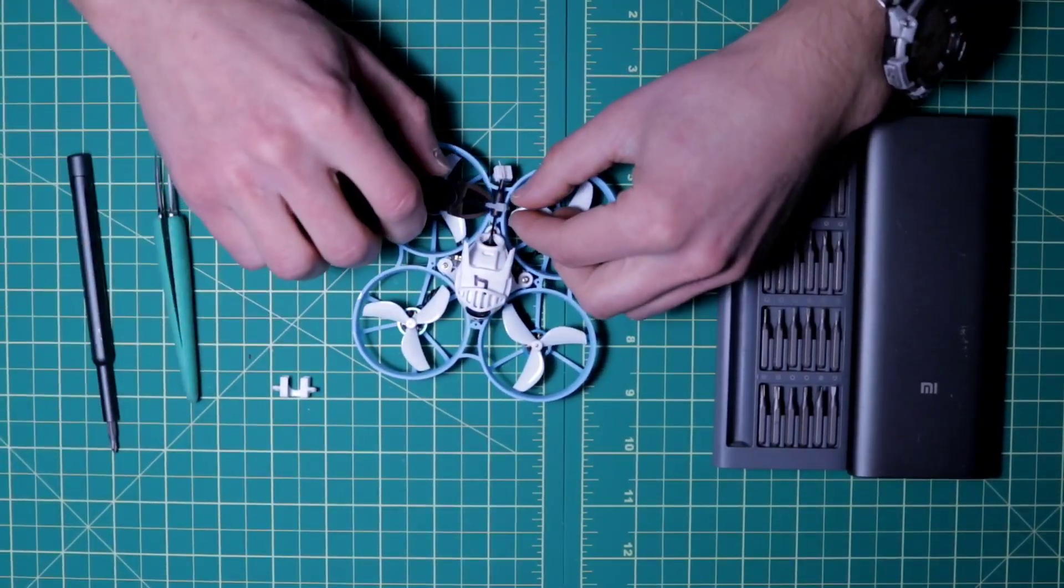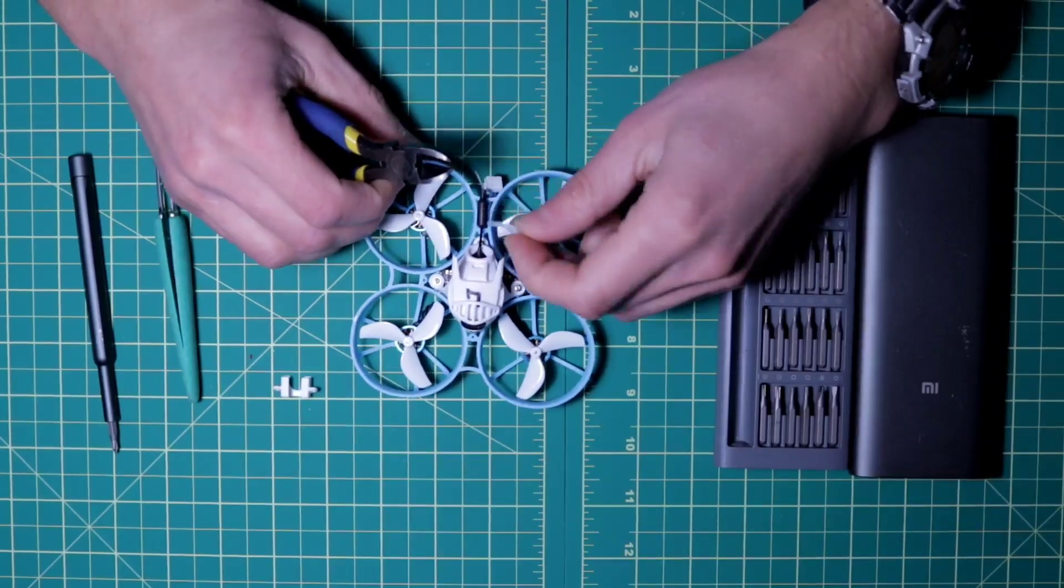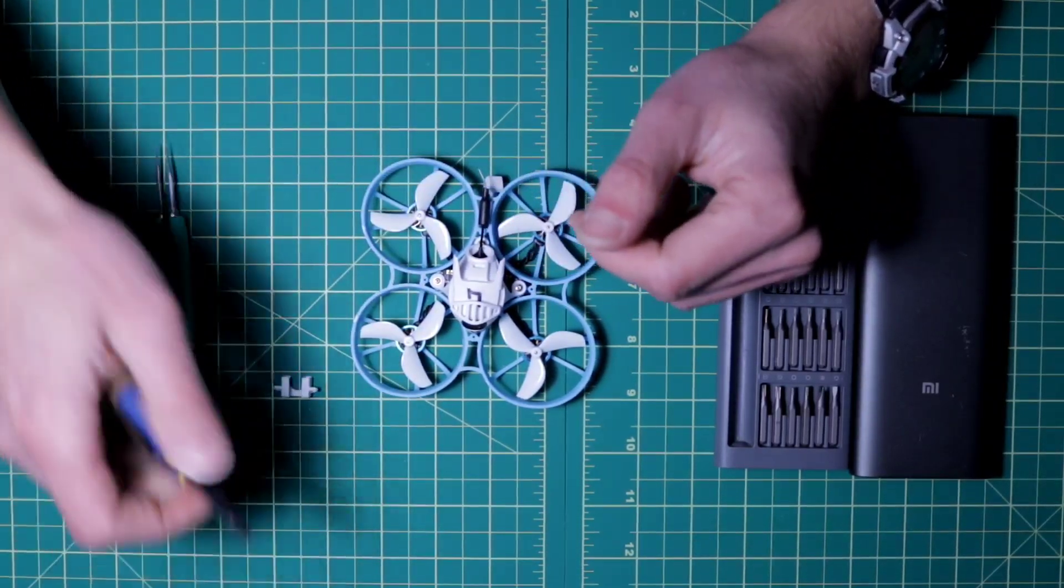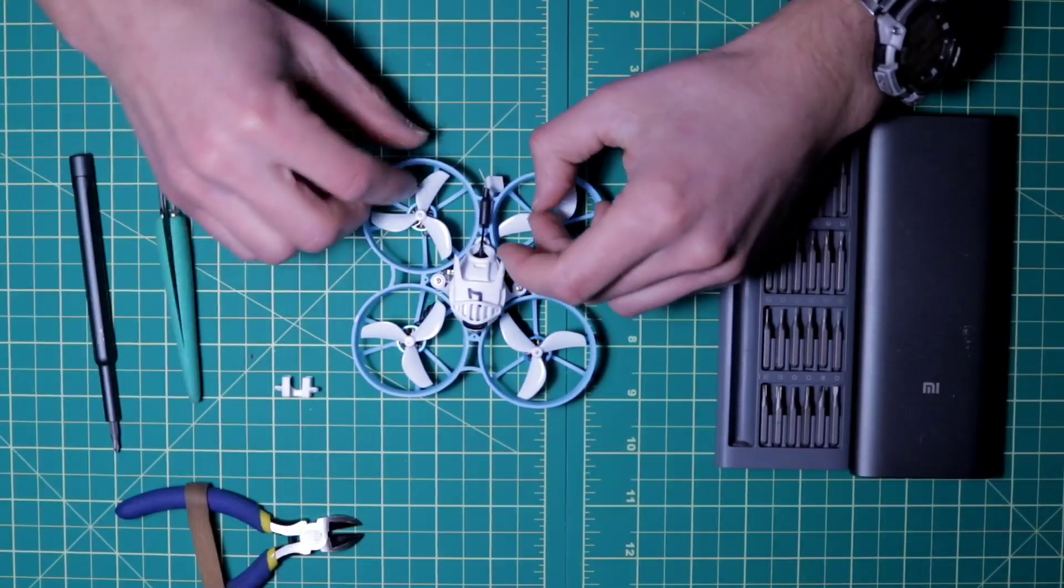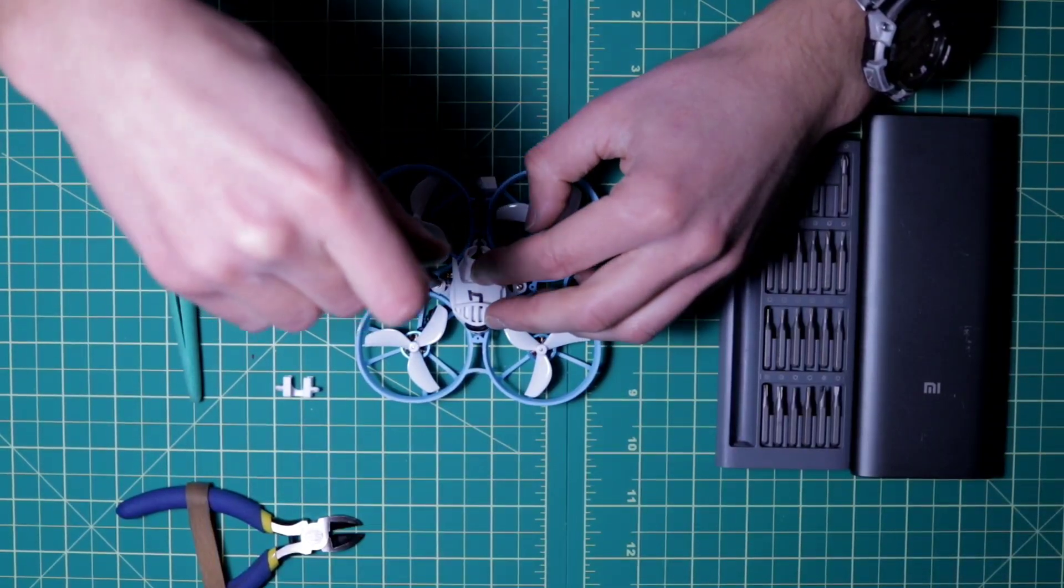Okay, first we cut zip tight that we applied before. Reason why? Check later in the video. Then we have to loosen the screws. We are using hex tool or you can use other screwdriver set.